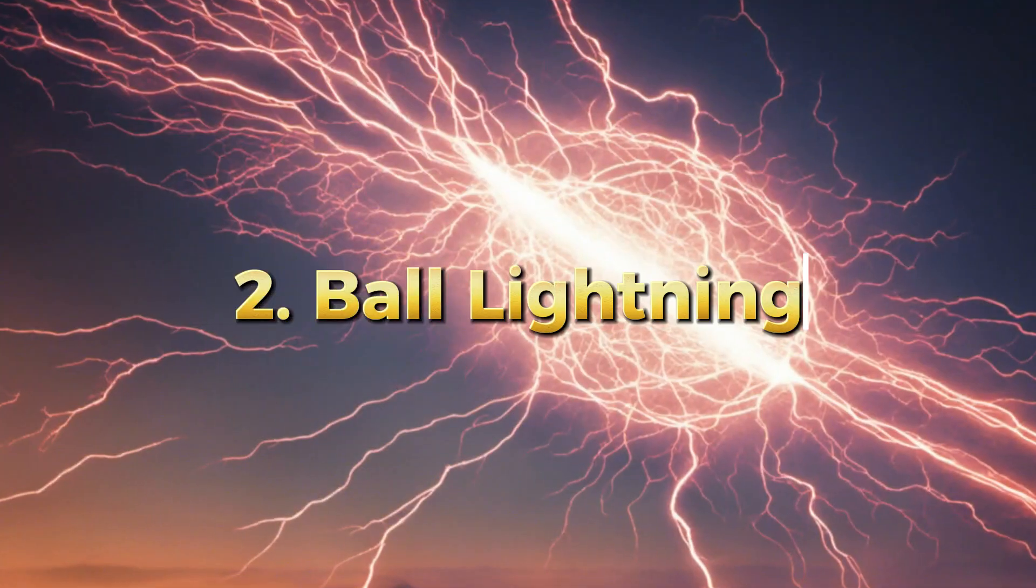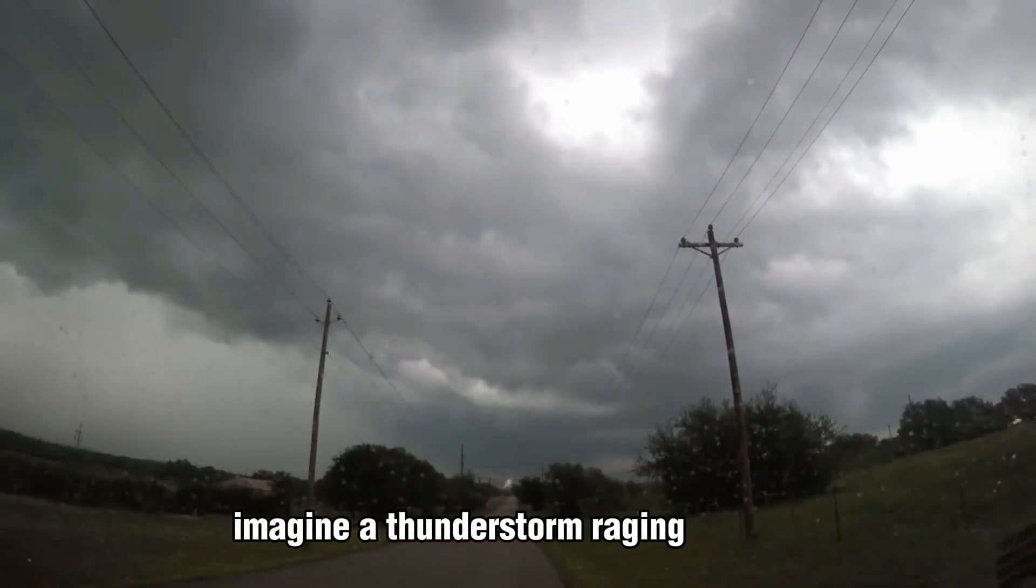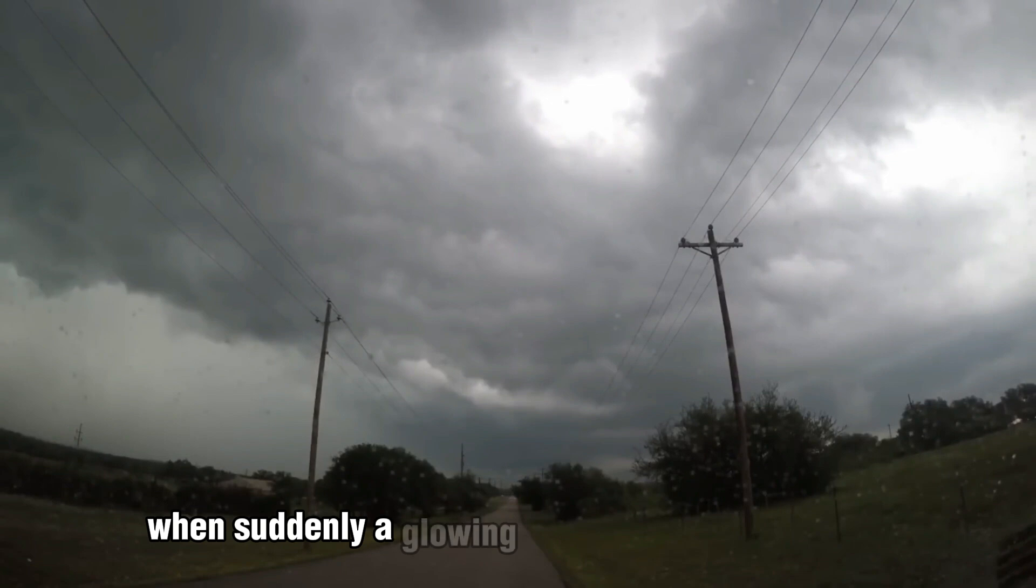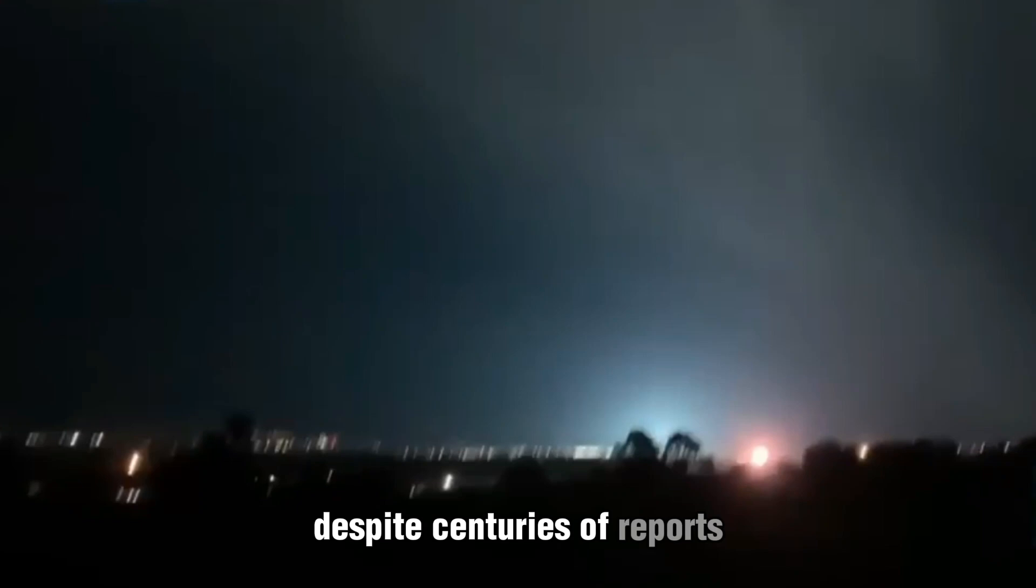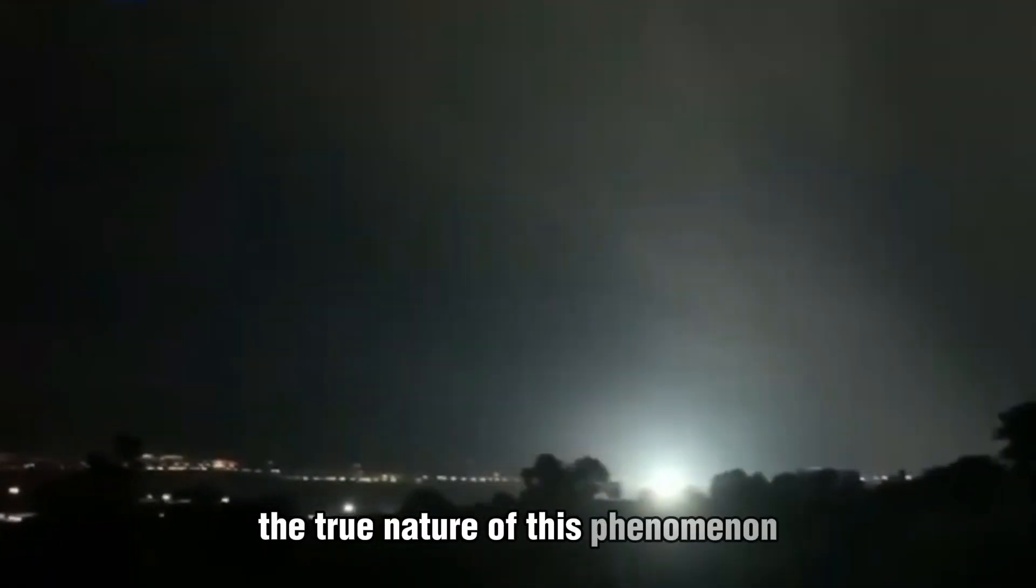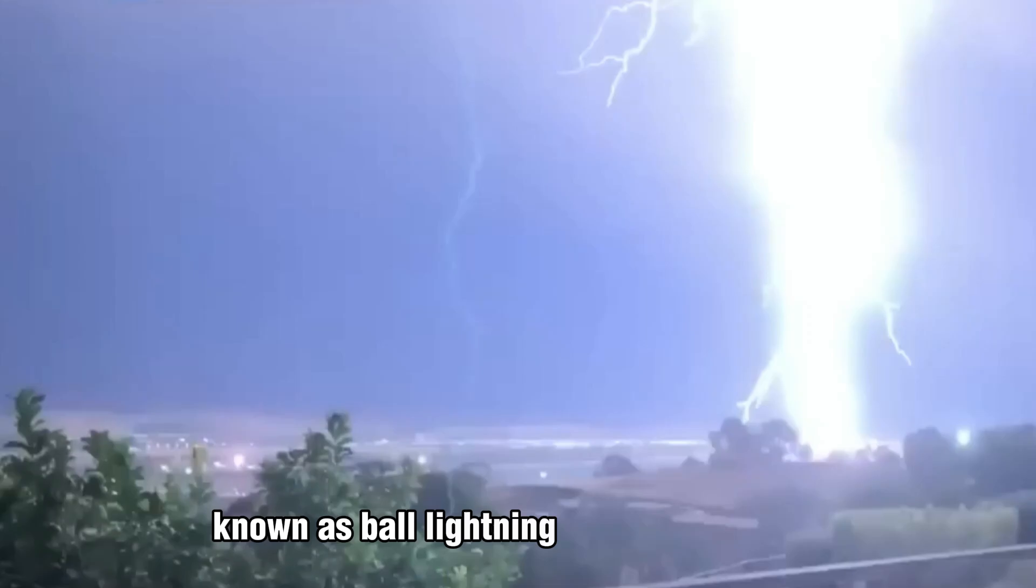Ball Lightning: Imagine a thunderstorm raging outside, when suddenly a glowing orb drifts through the air, shimmering with an eerie light. Despite centuries of reports, the true nature of this phenomenon, known as ball lightning, remains unknown.